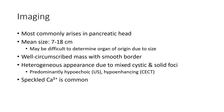Pancreatoblastoma most commonly arises in the pancreatic head, with a mean size of 7 to 18 cm. It may be difficult to determine the organ of origin due to its size. It appears as a well-circumscribed mass with smooth borders, heterogeneous appearance due to mixed cystic and solid components, predominantly hypoechoic on ultrasound, hypoenhancing on contrast-enhanced imaging, and speckled calcification is common.